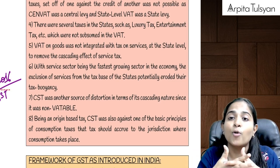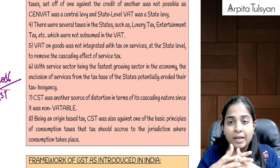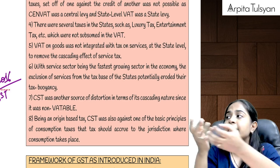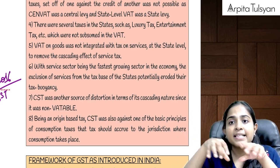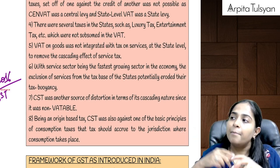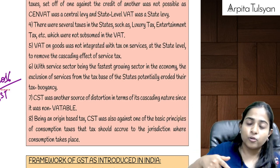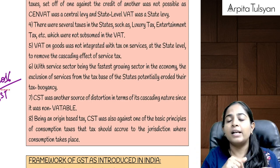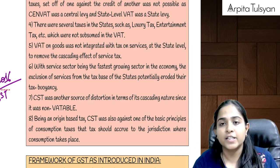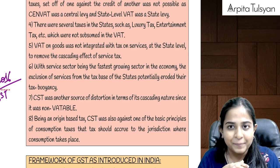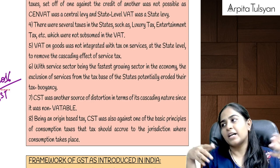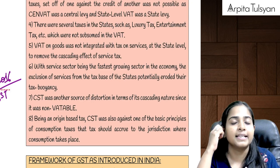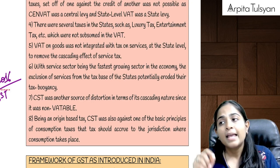VAT and service tax were not integrated. Let's say to provide teaching services, if I am purchasing some goods, I will be paying tax on those goods. Plus I will be paying the tax while providing the services also. There was no credit available. Again, because of different governments — VAT to state government, service tax to central government — no set-off was possible.